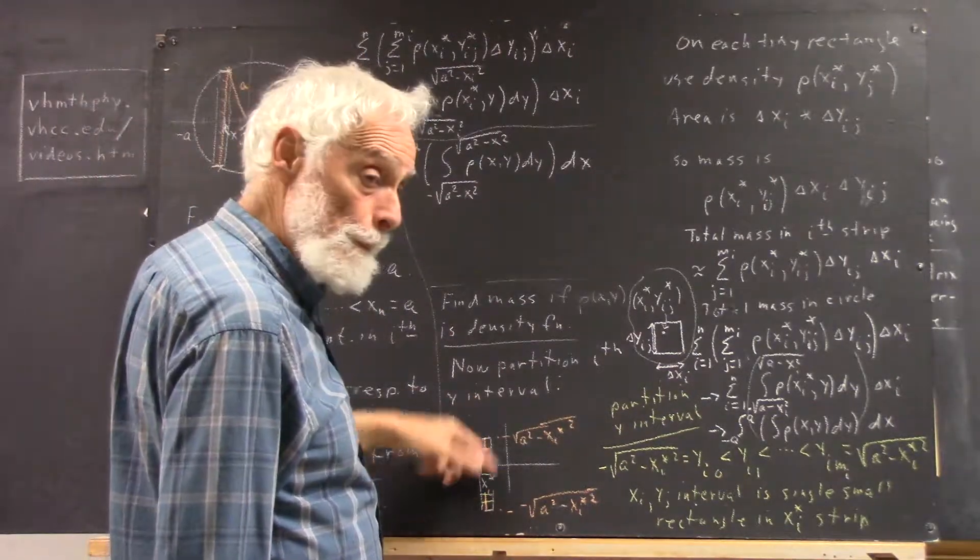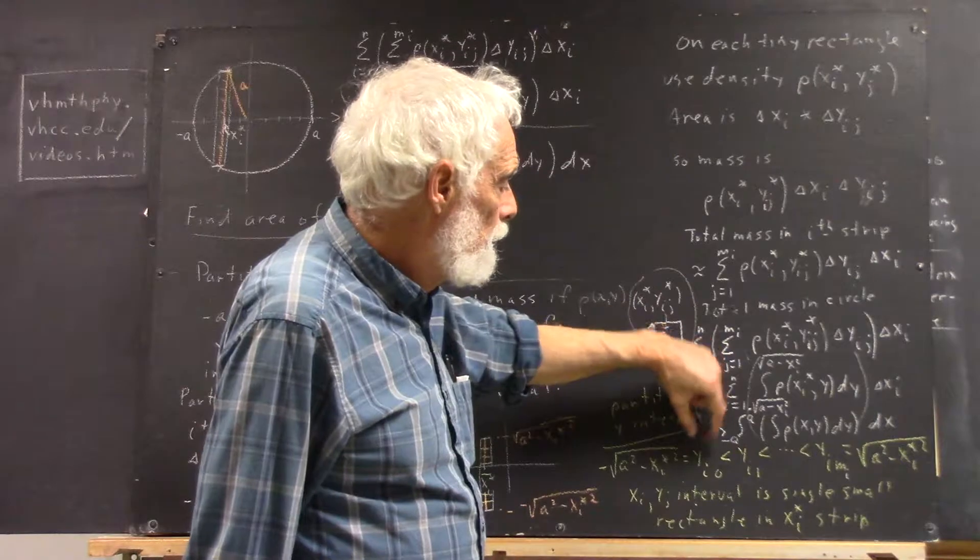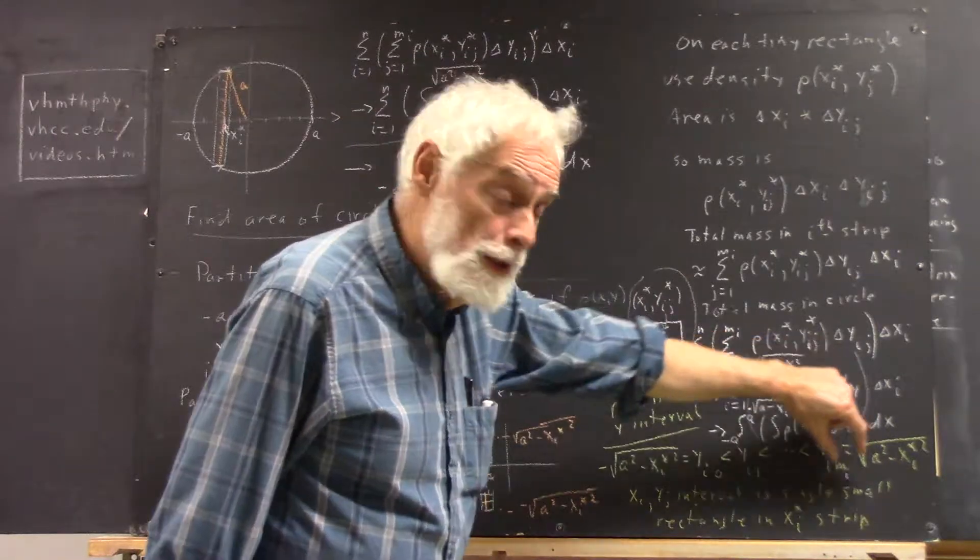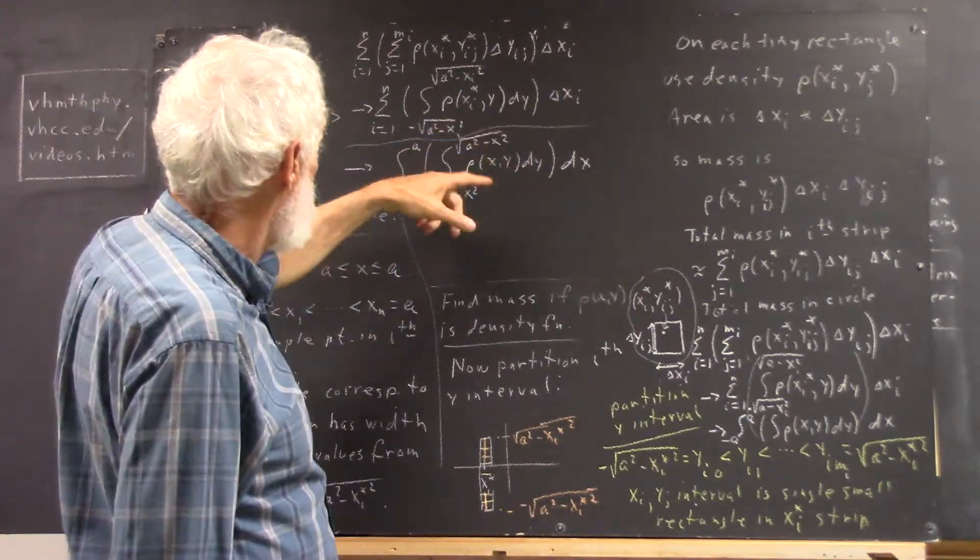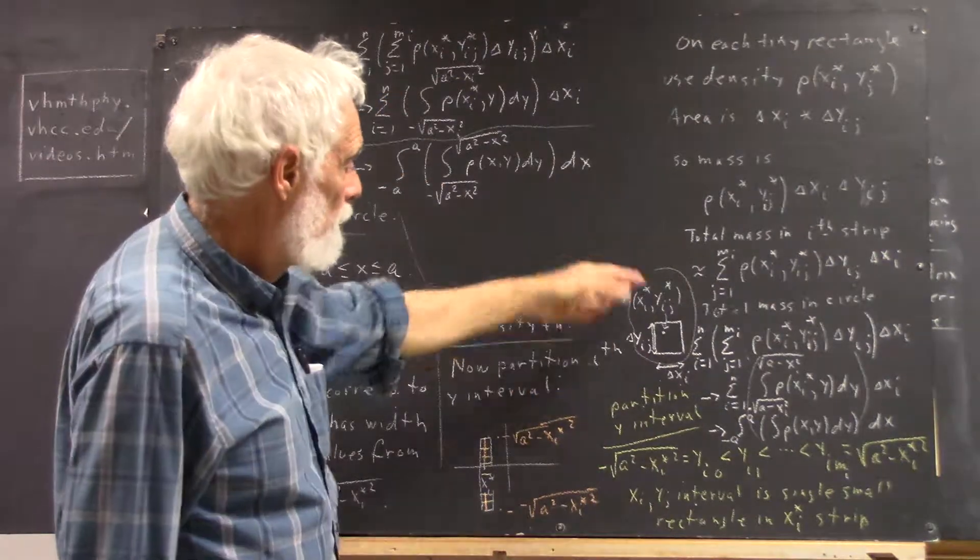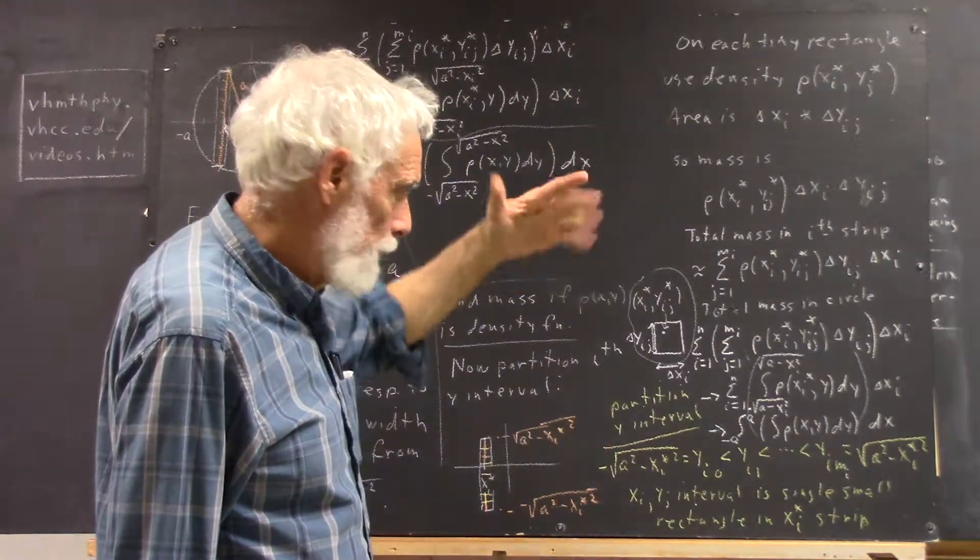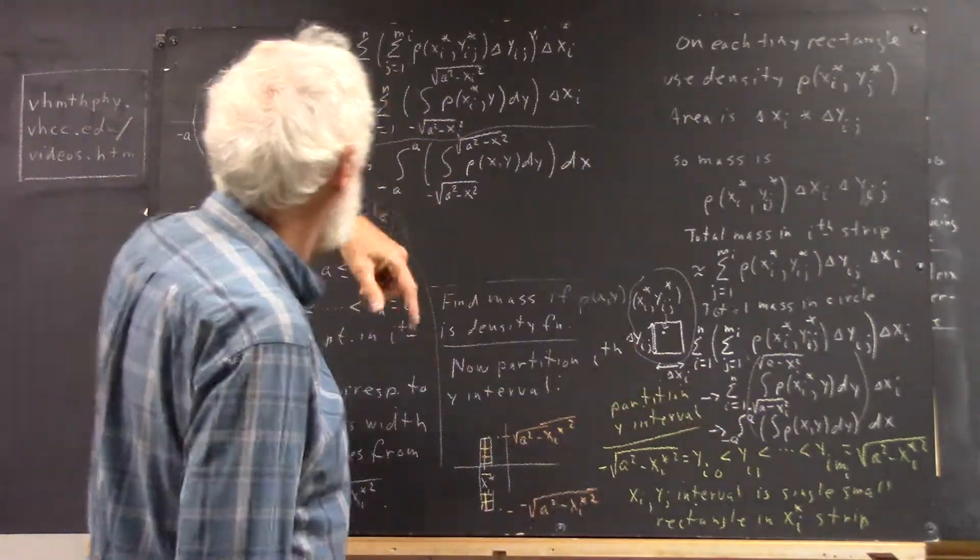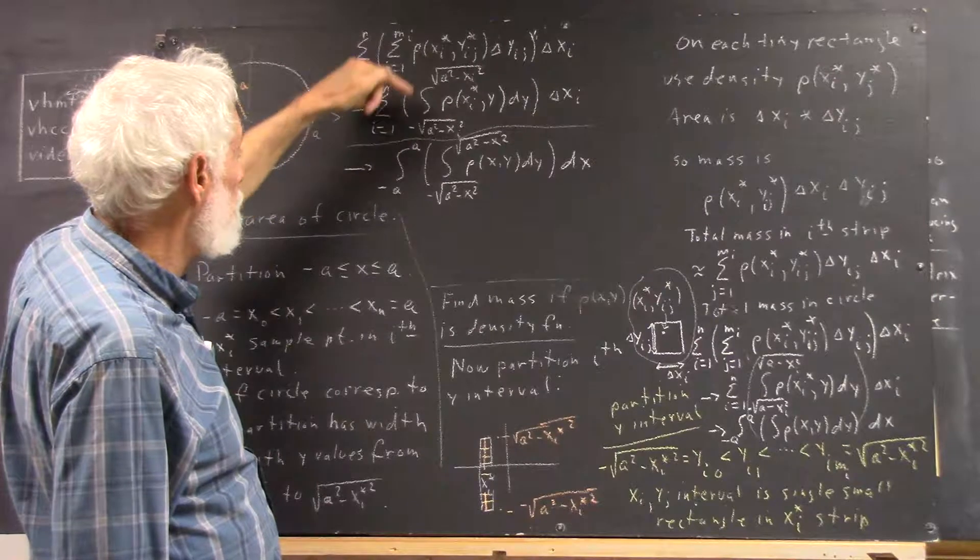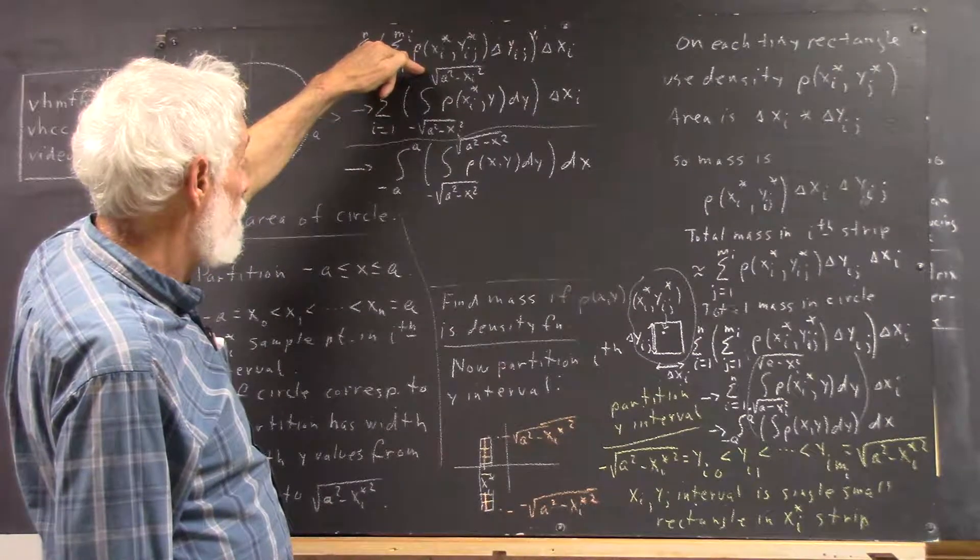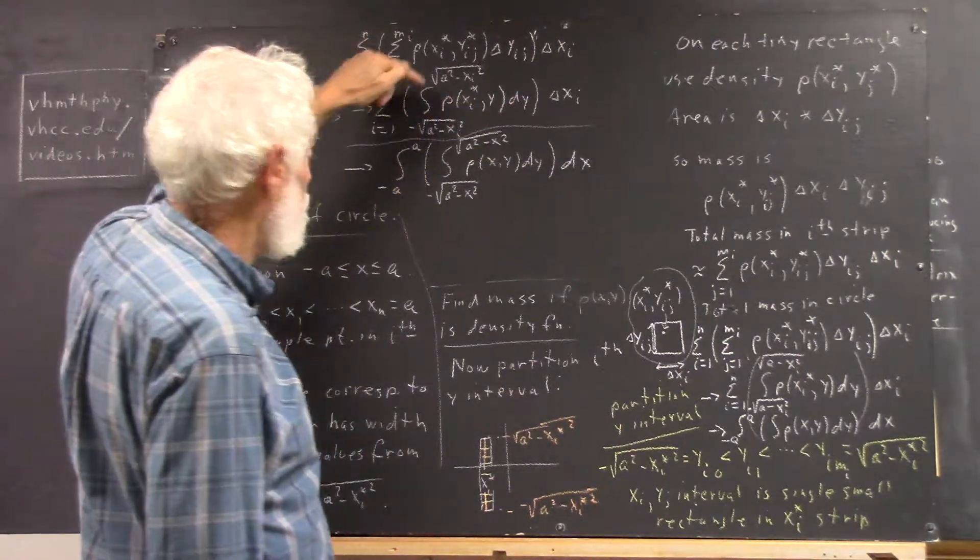Now, for any i, we let the widths of the y-intervals approach zero. And in the process, this sum here in parentheses approaches the integral from the limits of the partition, negative square root of a squared minus xi squared to square root of a squared minus xi squared. And we'll be integrating rho of xi star y with respect to y between these limits.